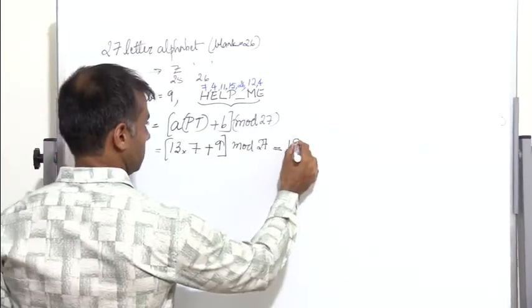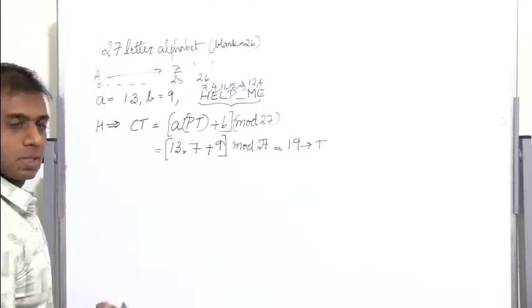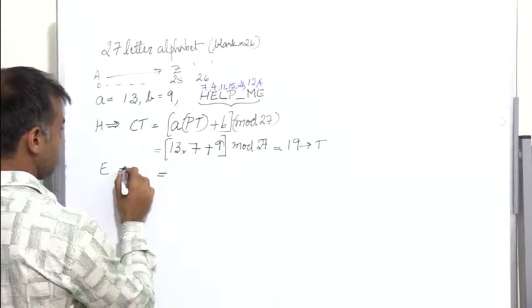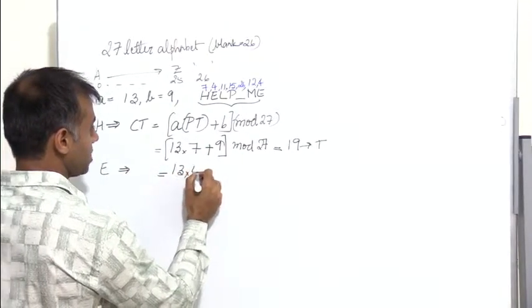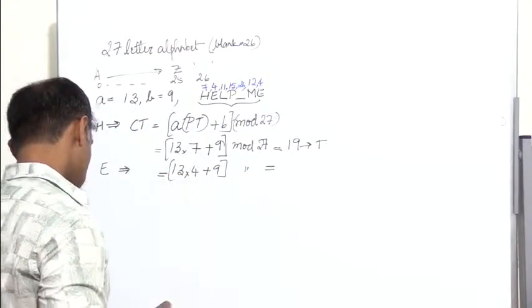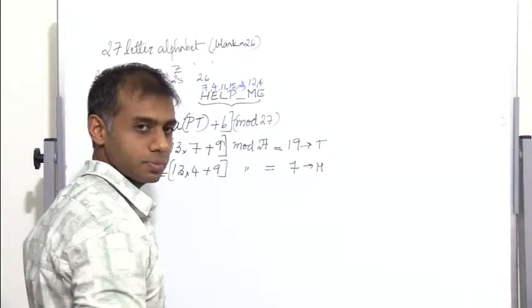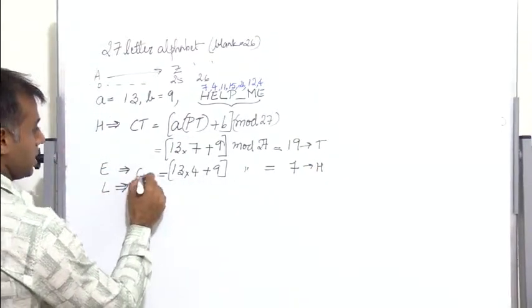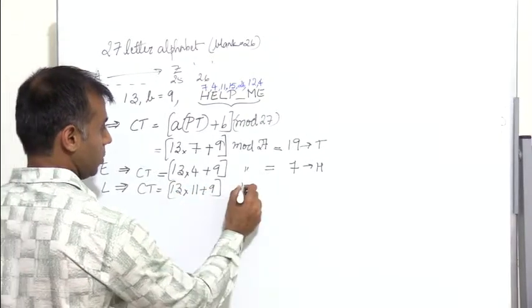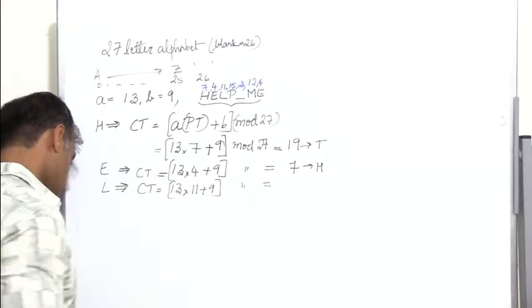So 19 corresponds to the alphabet t. Next, for e: the ciphertext is 13 into 4 plus 9 in mod 27, which gives the value 7, corresponding to h. For l: the ciphertext is 13 into 11 plus 9 in mod 27, giving r, which is 17.